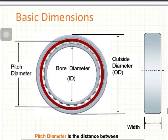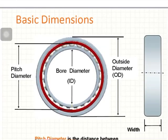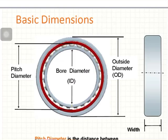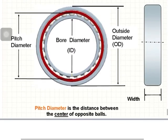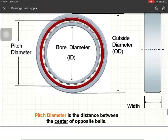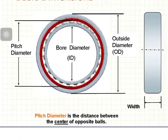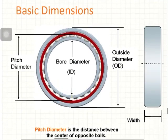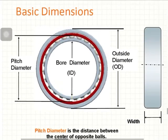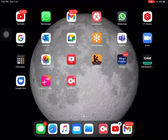The basic dimensions of a bearing include the pitch circle diameter, outside diameter, and width. The pitch circle diameter is the distance between the centers of opposite balls. We will continue with the other types of bearings in the next class.